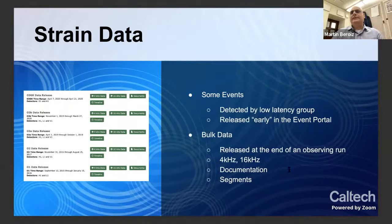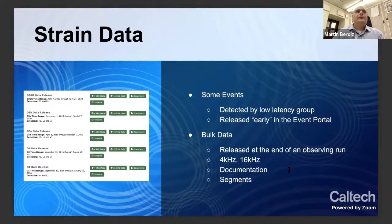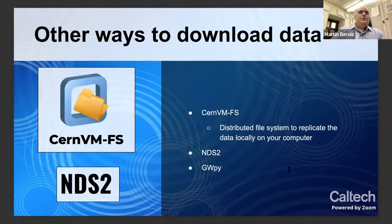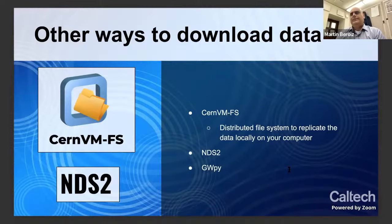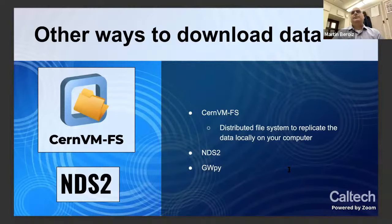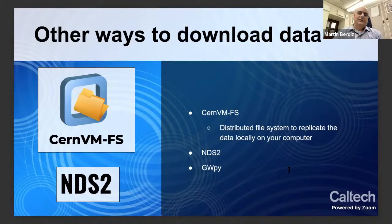This bulk release is typically done at the end of an observing run, and on the left you can see examples of past data releases. If you're going to work with all of the data, we recommend downloading through something called CVMFS, which is basically a distributed file system developed by CERN to replicate remote data locally on your computer. You can also use NDS2, which you can find more about on our website, or dedicated software like GWPy. Those are the main ways to download data.